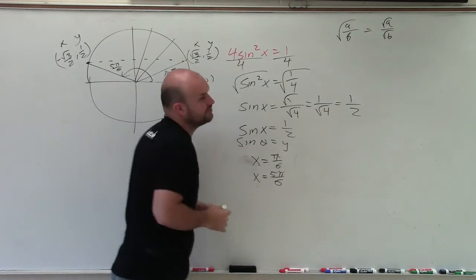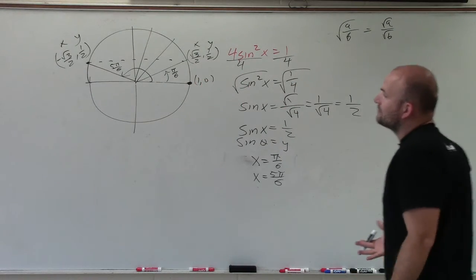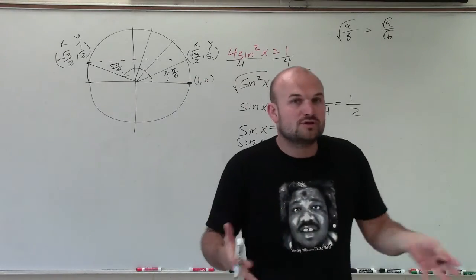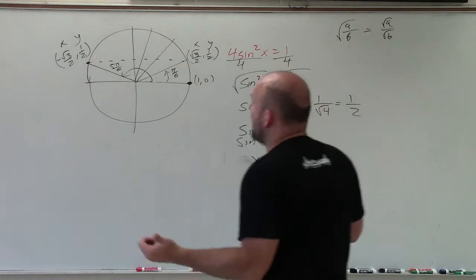However, what we're trying to do is determine all of the solutions. So therefore, I need to determine, well, how am I going to determine all my solutions? Now, remember, when we found coterminal angles, coterminal angles allow us to determine multiple revolutions just by adding 2 pi.